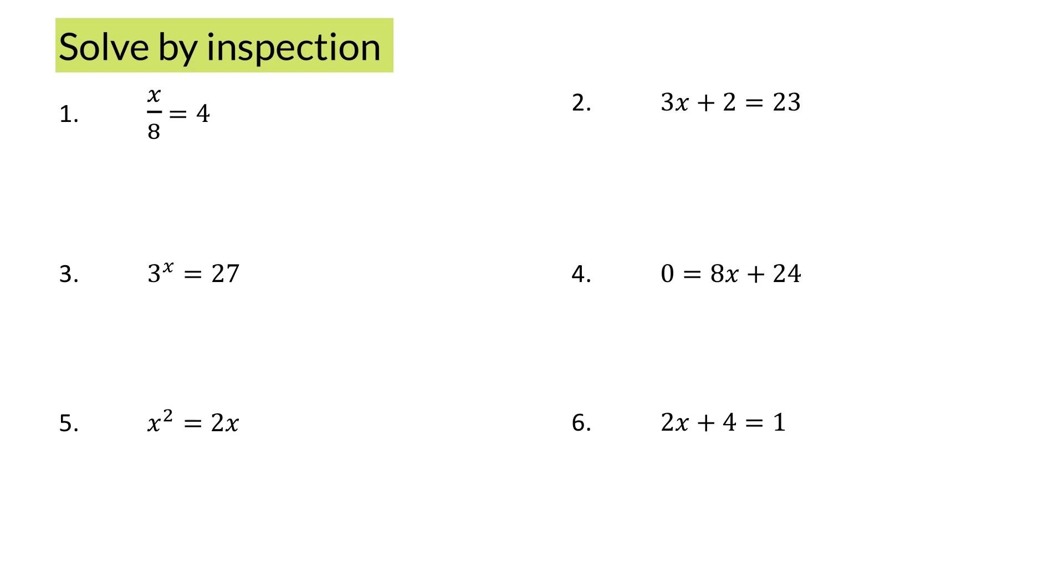I'm now going to discuss the solutions to the equations. The first equation says x divided by 8 is 4. Now I know from my knowledge of mental maths that x must be 32. Why? Let me check my answer. My left-hand side will be 32 divided by 8, which I know is 4, which is equal to my right-hand side. Let's look at the next question.